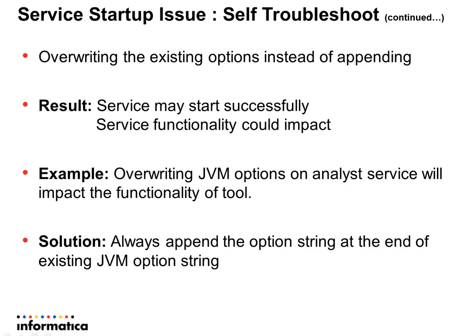Another mistake users make is overriding the existing option string instead of appending to it. In this case, the service may start successfully, but that does not mean the functionality is proper. Since the existing options have been removed, the functionality of the service could be impacted. Be cautious not to override the existing JVM arguments unless suggested by Informatica engineers.